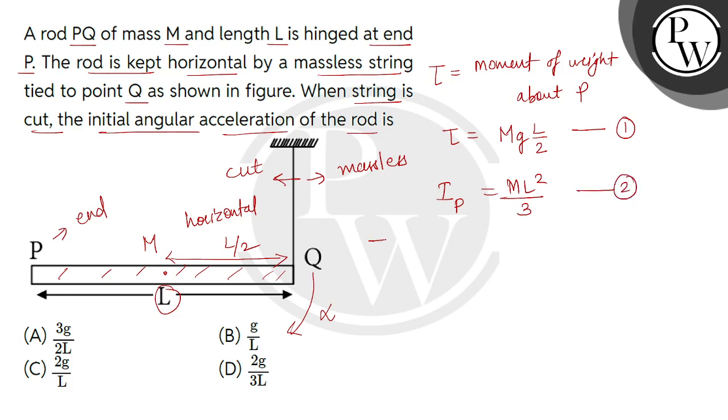Now we can write torque as the product of moment of inertia and angular acceleration. So we will put values from both equations. Torque value is MgL by 2 and moment of inertia is ML squared divided by 3 multiplied by alpha. So M cancels, L cancels, so we get alpha value as 3g divided by 2L. So correct answer will be option number A. Thank you.